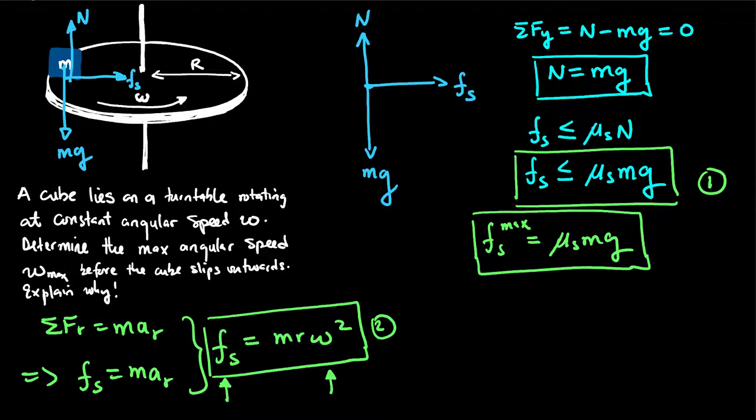Hence, if we continue to increase omega, there will come a point in which the centripetal force required is greater than the maximum static friction. When that is the case, there will not be a sufficient force to compel the cube to move in a circle at that particular point. It will skid outwards in a straight line in accordance with Newton's first law of motion.